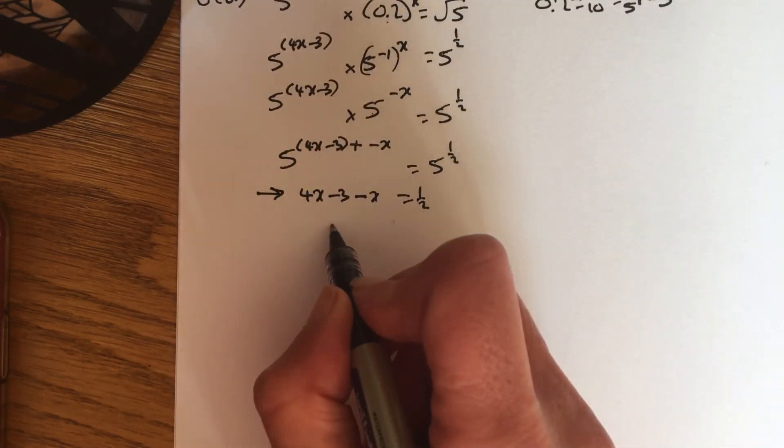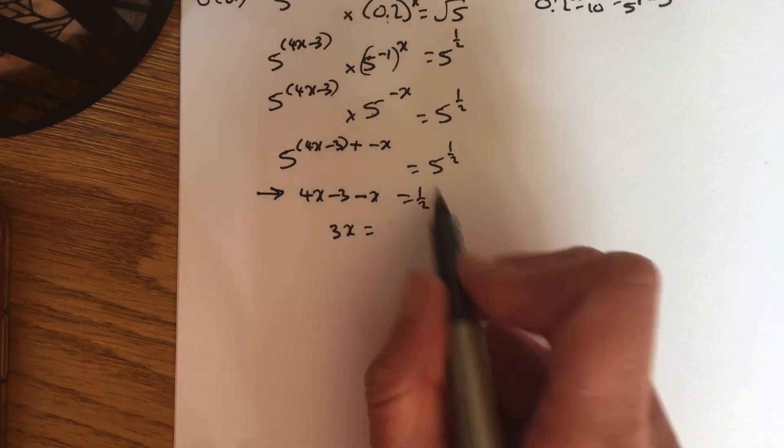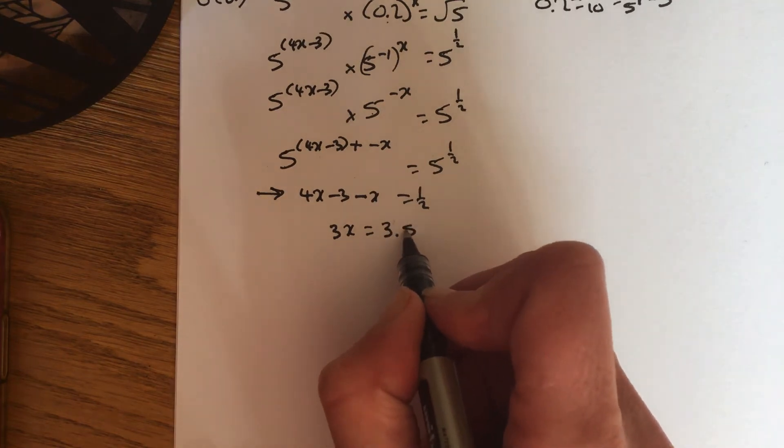Tidying up here, 4x minus 1x is 3x. Bringing this 3 over to the other side, and it becomes an add, so 3.5.